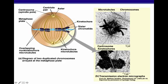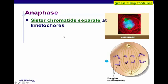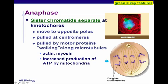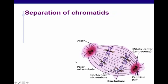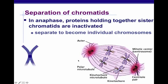In anaphase, kinetochore microtubules overlap with non-kinetochore microtubules. Sister chromatids separate at the kinetochores and move to opposite poles. Here's 12A separating, here's 12B separating. They are pulled at the centromeres by motor proteins walking along the microtubules — along the actin and myosin — driven by increased ATP production by the mitochondria. The poles move further apart and the polar microtubules lengthen. Proteins holding sister chromatids together are inactivated, so they separate to become individual chromosomes.